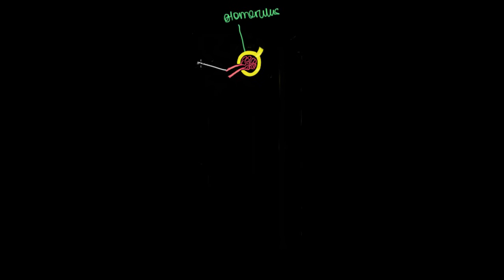And it's the structure that receives an arteriole that's called the afferent, meaning going towards arteriole. That's the arteriole that branches off of the renal artery and it gives off this vessel right there.